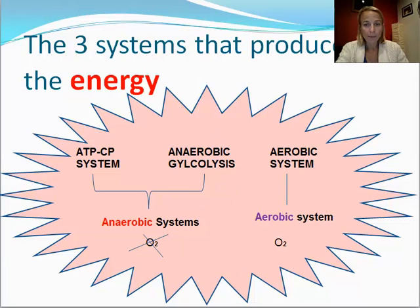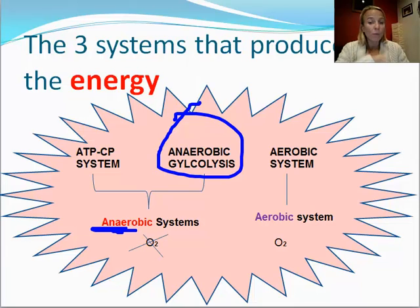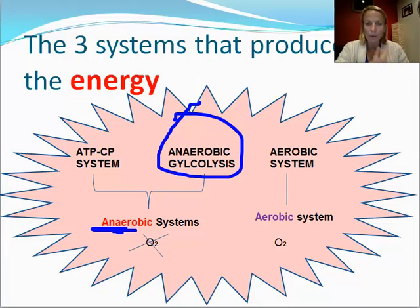Recapping: anaerobic glycolysis is an anaerobic system, so it requires no oxygen. When there is insufficient oxygen, we produce ATP via anaerobic glycolysis and the ATP-CP system. This occurs when we're in oxygen deficit — when our body hasn't had time to catch up and increase oxygen supply to meet demand.